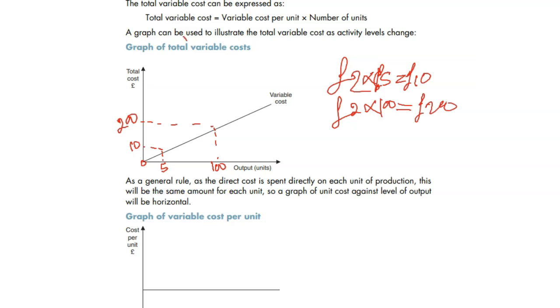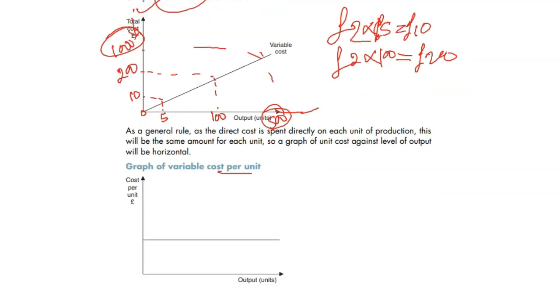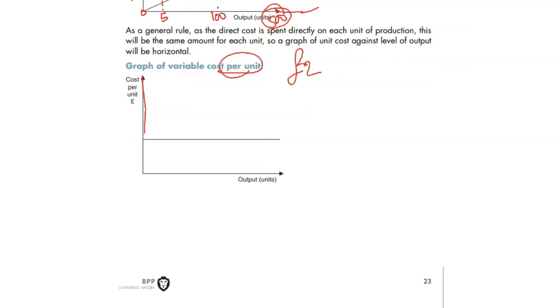That's the graph of variable cost total. Let's assume in total we have produced 500 units, so 1,000 pounds it cost us. The vertical is your money, and horizontal is the output. So total output is 500, and the total cost is 1,000 pounds. But variable cost per unit? We said 2 pounds. Variable cost per unit is unchanged.